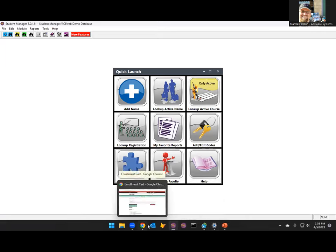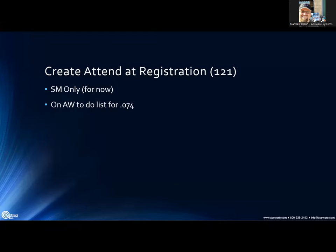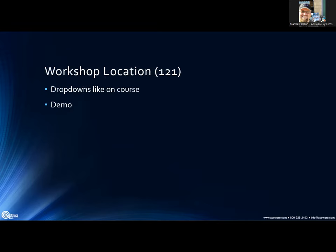Create attendance at the time of registration is now available in Student Manager — pretty self-explanatory; it creates the attendance record automatically when someone registers. It's also on the ACE Web to-do list (item 4074). Make sure when canceling registrations that you check 'remove attendance records' in the refund wizard if you want to clean up the attendance table. This should help those tracking attendance avoid having to go in and manually create attendance on the course.